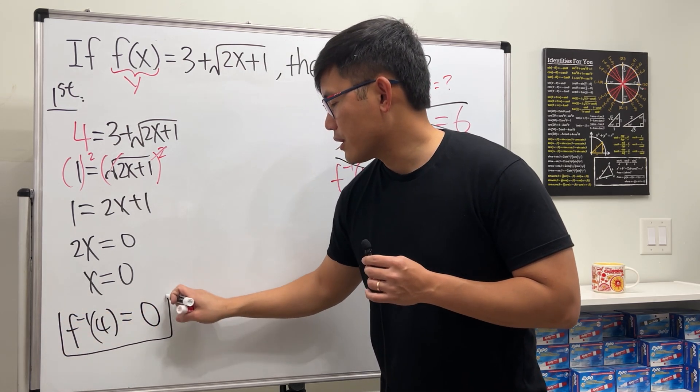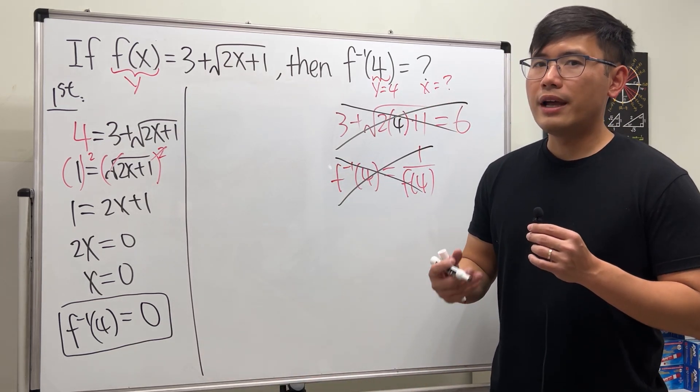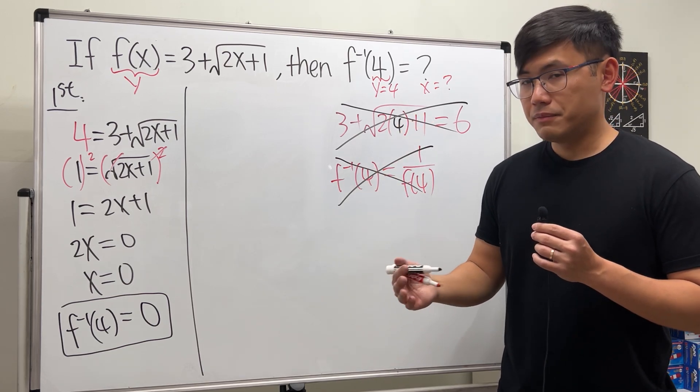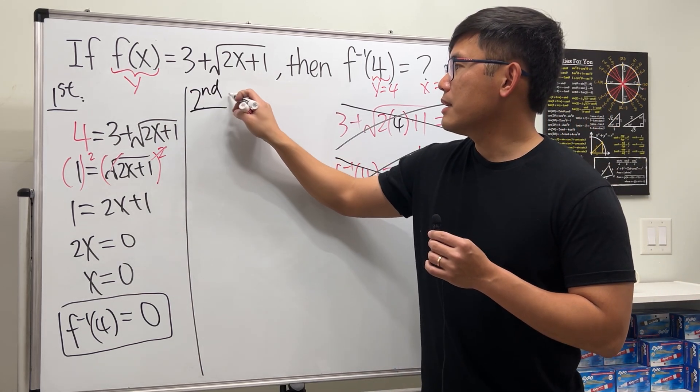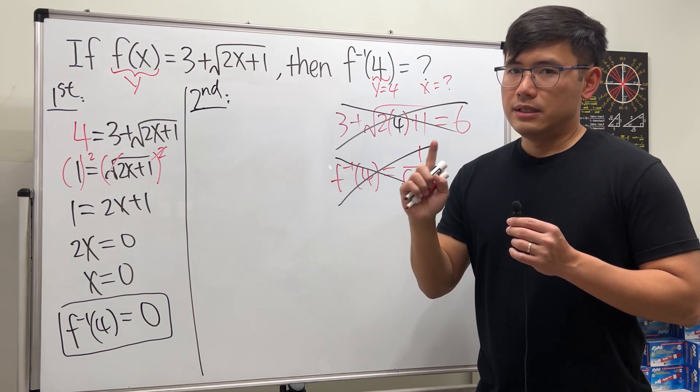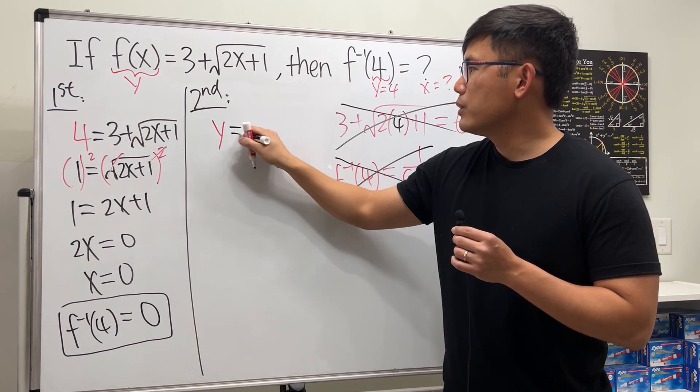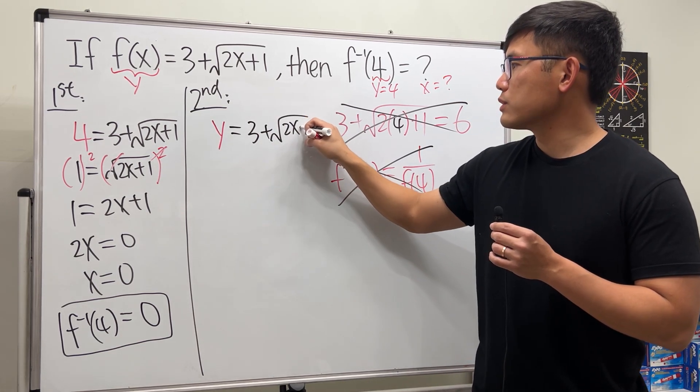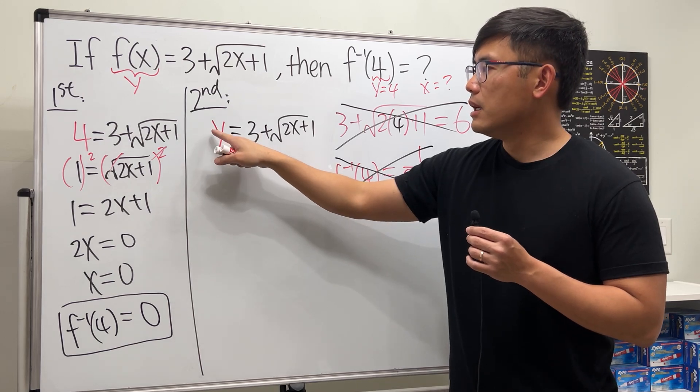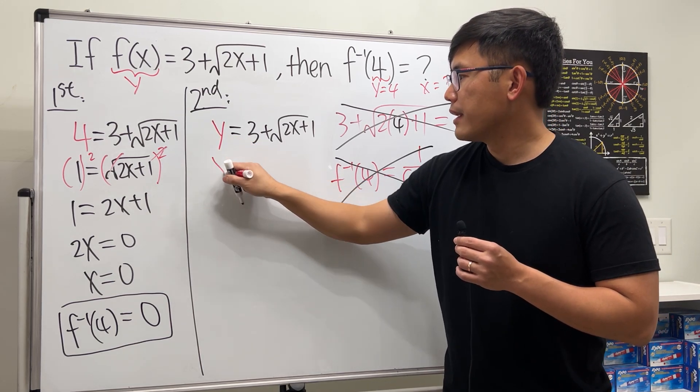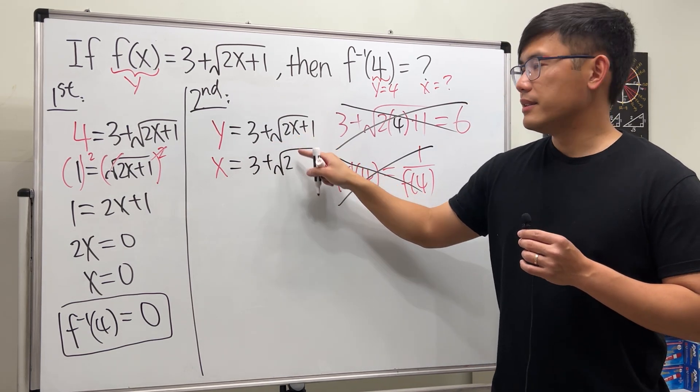So this right here is how I'm going to present the answer. Now the second method is just that we are going to write an expression for the inverse of f(x), and then we'll just plug in 4 in there. So check this out. Second method: to find f inverse, step one, we look at this and then just write y for f(x). So we write y is equal to 3 plus the square root of 2x plus 1. Step 2, we are going to switch x and y. So that means here is the y, now it's going to be the x, and then we have 3 plus the square root of 2, here is the x, now it's going to be the y plus 1.